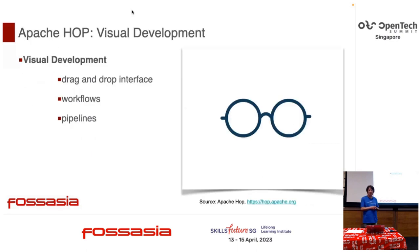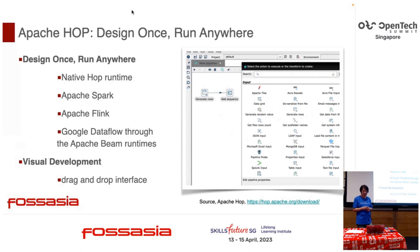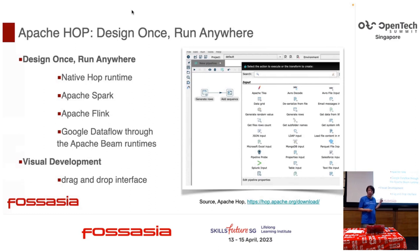The concept: Apache Hop features visual development, easy to use, with a drag-and-drop interface. You can create workflows and pipelines. And the principle is design once, run anywhere — like Java. It runs on the Native Hop runtime, Apache Spark, Apache Flink, and Google Dataflow.